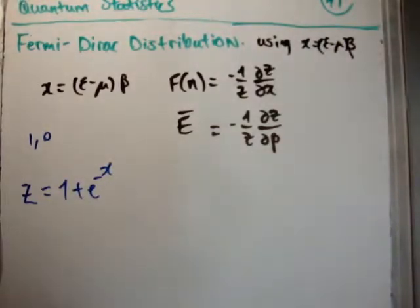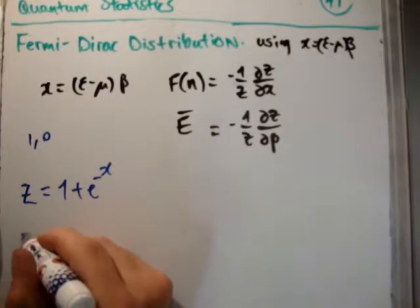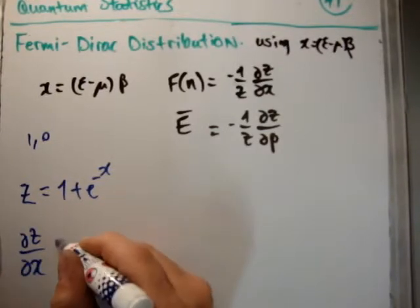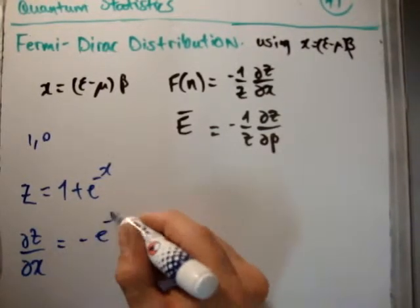I showed that in video number 40, so I'm not going to do it again. The grand partition function is 1 plus e to the minus x. So that means del z del x is going to be minus e to the minus x.